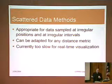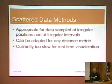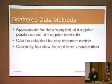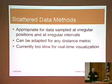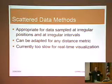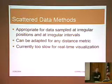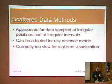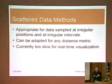Scattered data methods try to interpolate the underlying field that is actually being measured by the sensors. If we have a large number of sensors, we are not necessarily only interested in one particular sensor, but in the actual data that all these sensors are collecting. You can think of sensors as sampling data from a continuous underlying field, such as a temperature field or a pressure field. In order to do that, we can use these scattered data methods, and we have to adapt them for various different distance metrics.